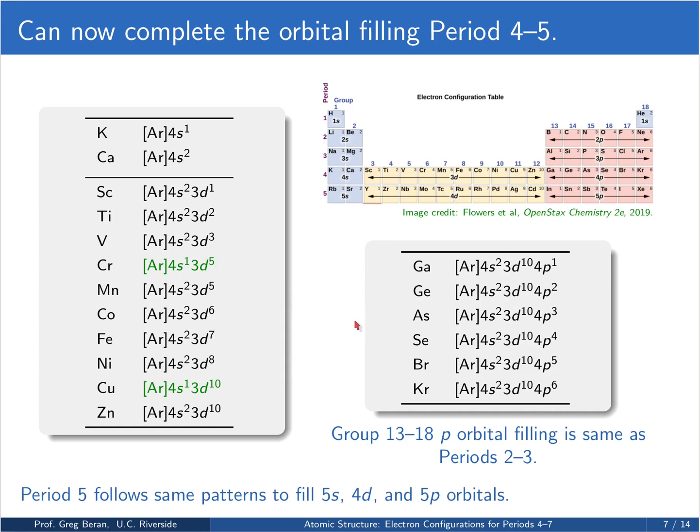Now period 5 behaves basically the same as period 4, except we're filling the 5s, 4d, and 5p orbitals instead of the 4s, 3d, and 4p ones.